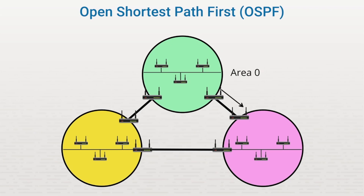With a link state protocol, the boundary between the areas is designated by area border router locations. There's one more type of router for OSPF configuration: the autonomous system border router, whose job is to communicate with routers outside of the autonomous system. To review, OSPF's key design characteristics are an Area 0 that connects all other areas, routers within each area that share information about routes, area border routers that share information between areas, and the autonomous system border router that shares information outside of the autonomous system.